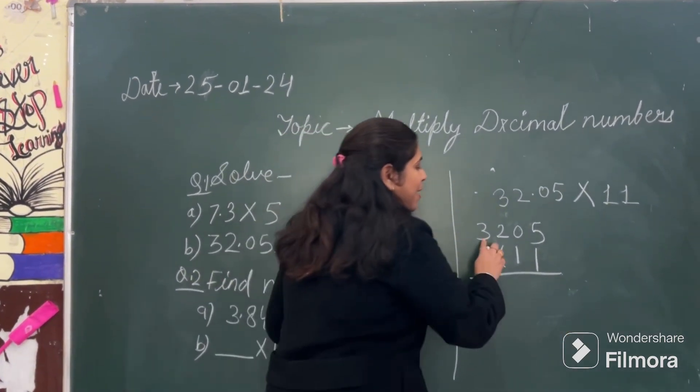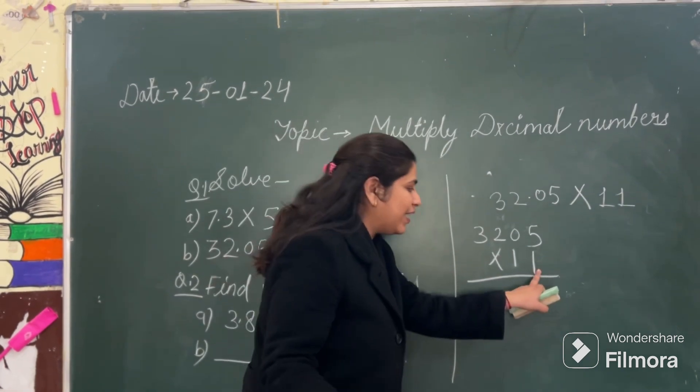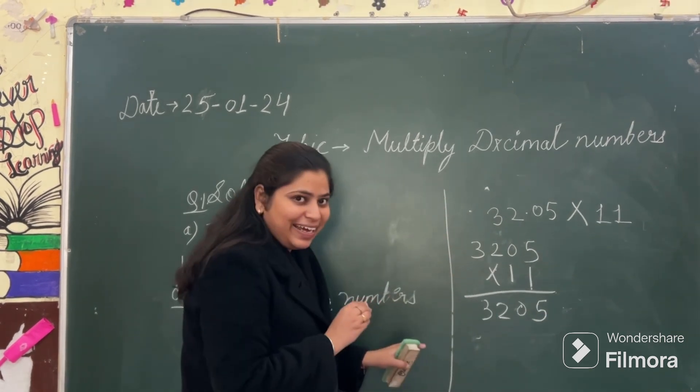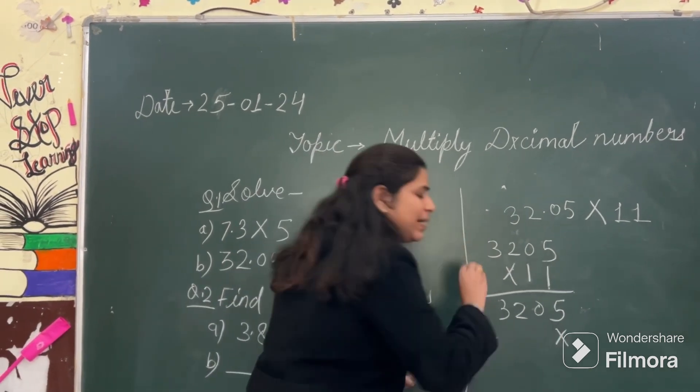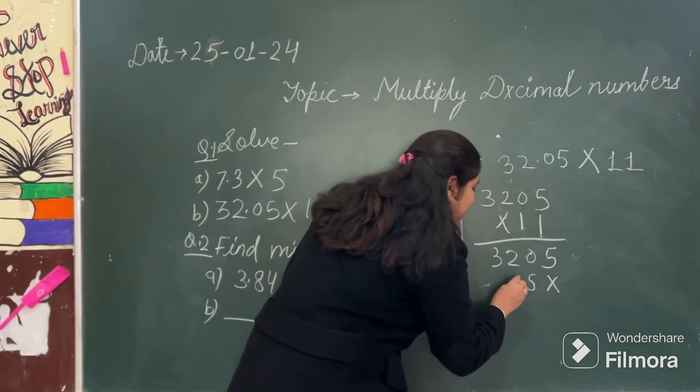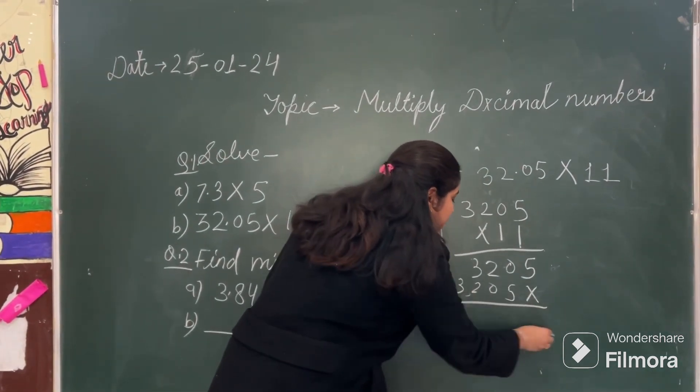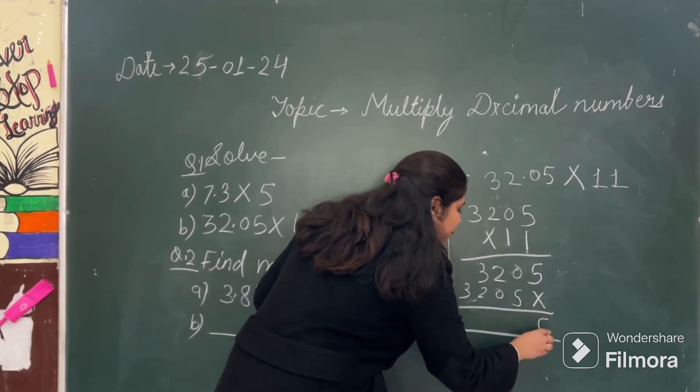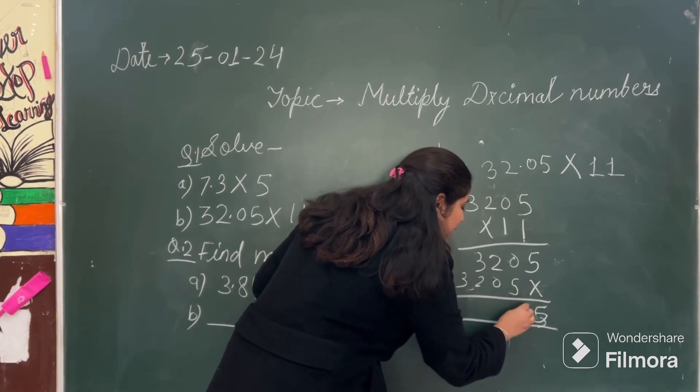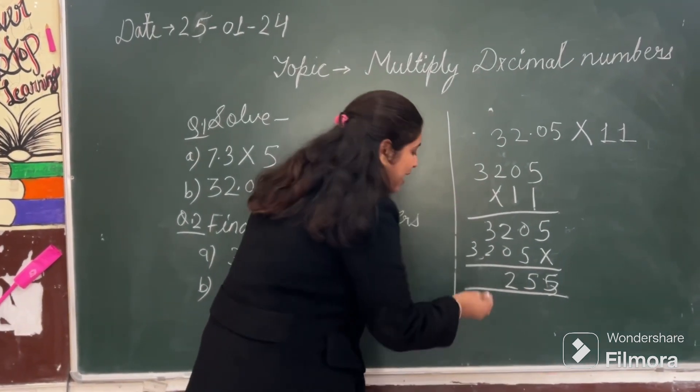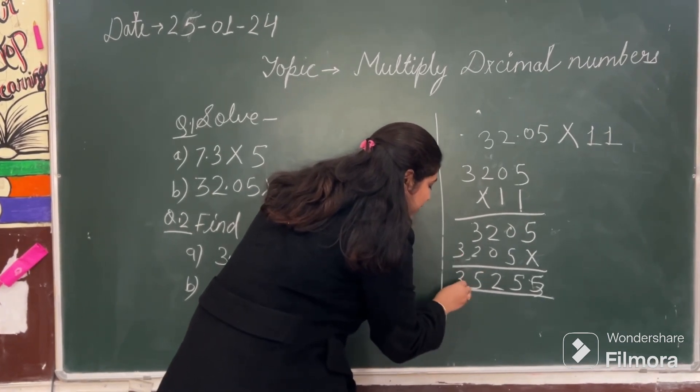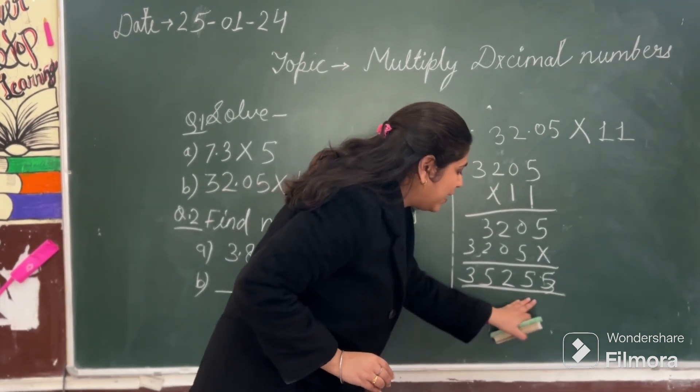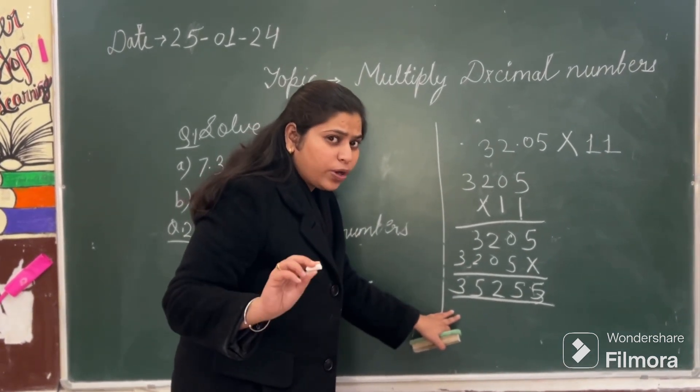Very easy calculation. Because we know any number you multiply with 1, you are always going to get the same number. So the first product I got is this. Correct? And then I will make here a multiplication sign. Then again if I multiply I am going to get the same number. Let's add to get our final answer. So 5 will be 5. 0 plus 5, 5. 2 plus 0, 2. And 3 plus 2 is 5. And 3 will be 3. So what is the final answer you got? 35,255.